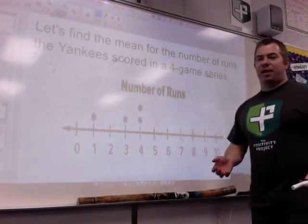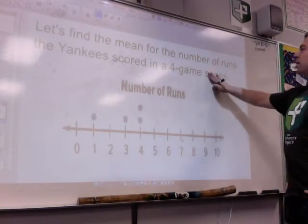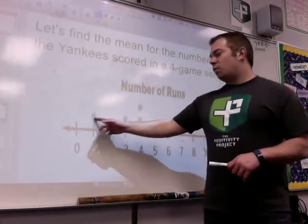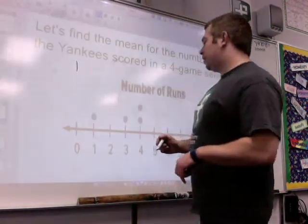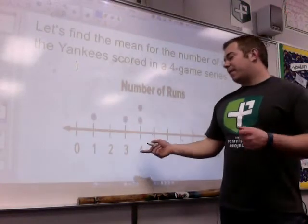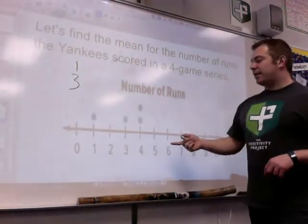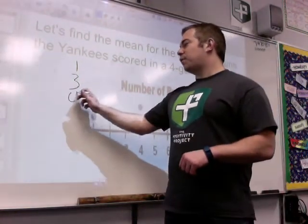Now I'm going to look at a dot plot. You'll see this in your books too. Let's find the mean for the number of runs the Yankees scored in a four-game series. So in one game, they scored one run. In another game, the second game possibly, they scored three runs. And for two games, they scored four.